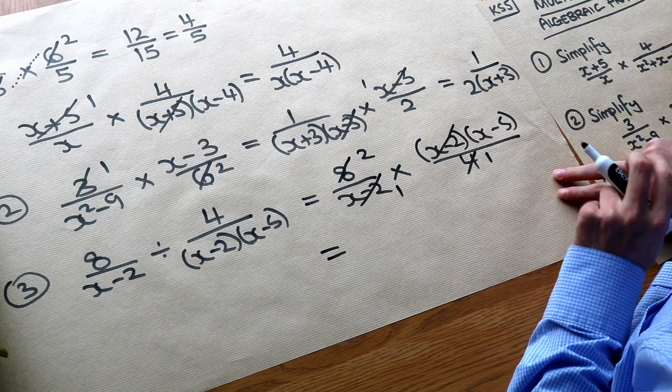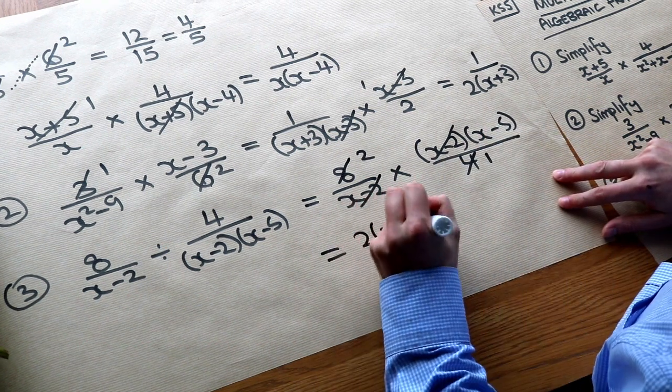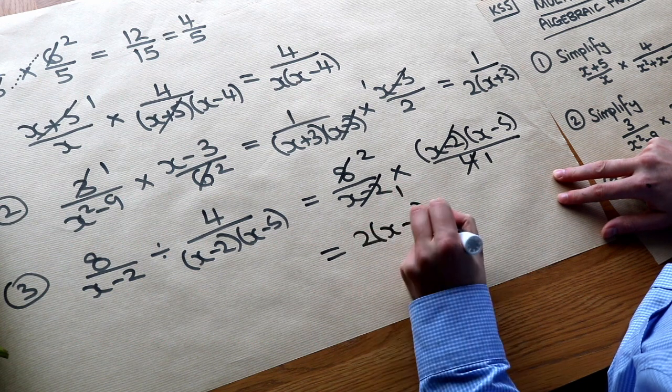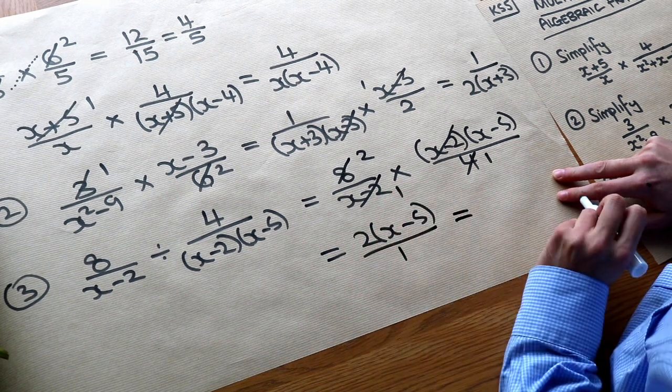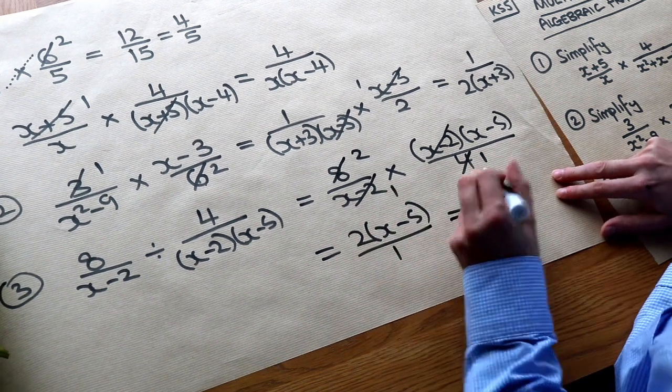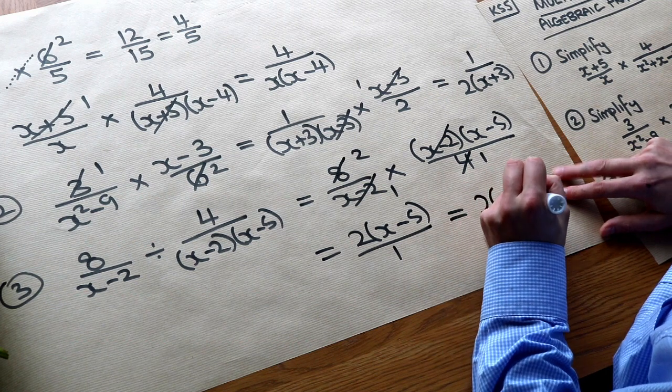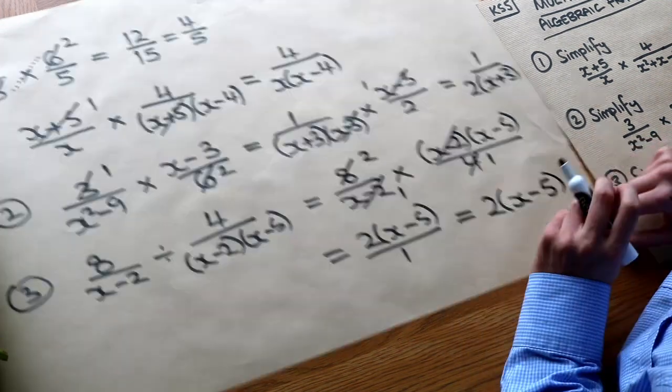So it's 2 times x minus 5 which is 2 brackets x minus 5, and we've got 1 times 1 which is just 1. And never ever ever leave a fraction over 1, it's just 2 brackets x minus 5, or if you prefer 2x minus 10, it's the same thing.